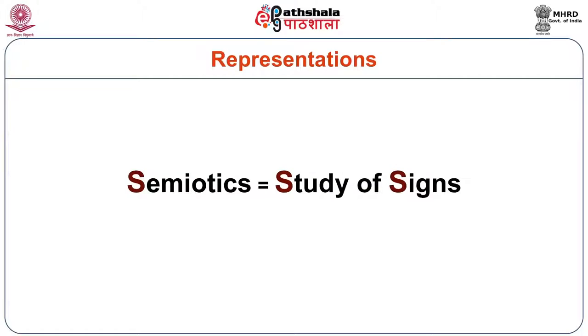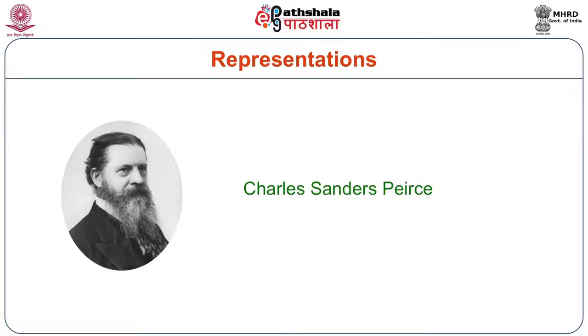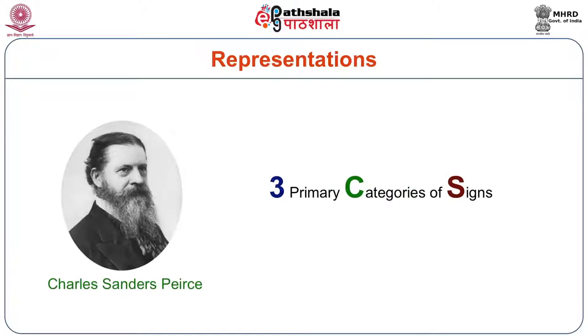The first kind of representational mode that cultural studies is interested in comes from the semiotician — semiotics is the study of signs — Charles Sanders Peirce, who argued that there are three primary categories of signs. The commonest example would be, if you look at your cell phones or your printers, a sign which suggests the object itself. A printer will be a printer sign. Information will be an eye. These are icons.